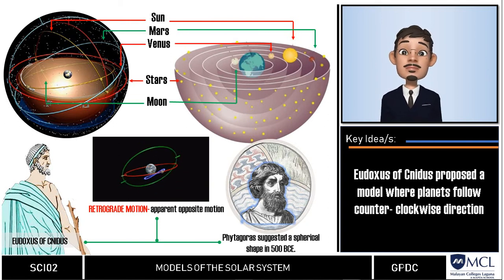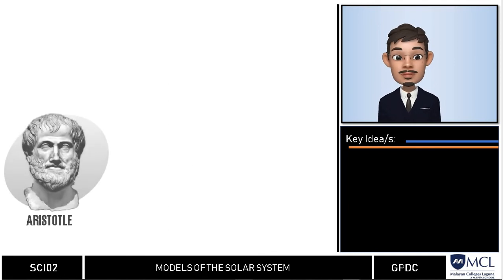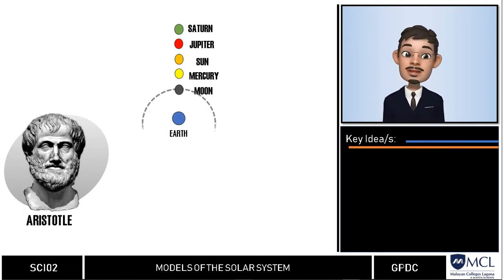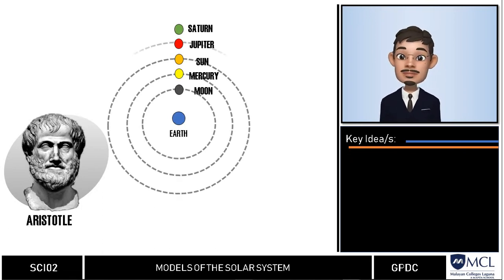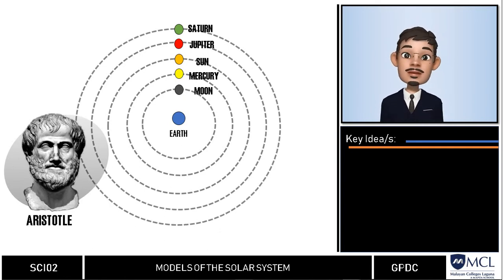This is where the idea that the earth is at the center of the universe was born. Aristotle extended the model introduced by Eudoxus in the fourth century. Just like Eudoxus, Aristotle believed that the earth was at the center of the solar system and the sun and other planetary objects orbit around it. He added that the universe is finite in terms of space but eternal in time.